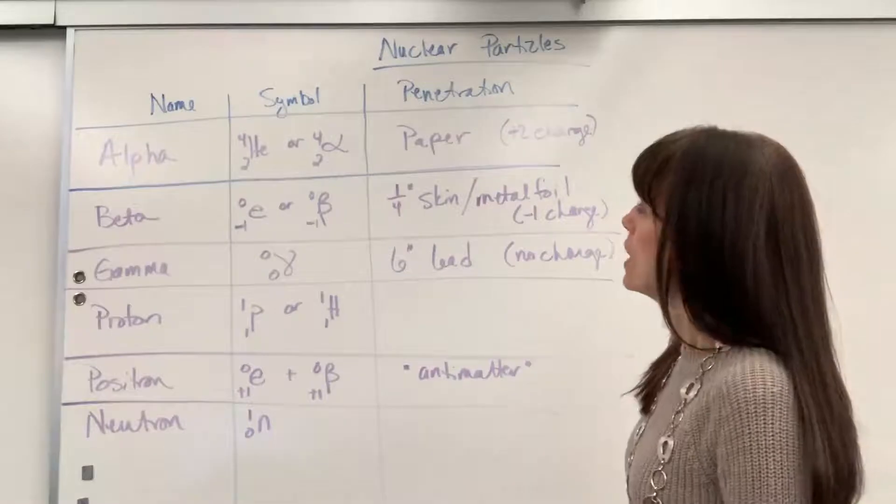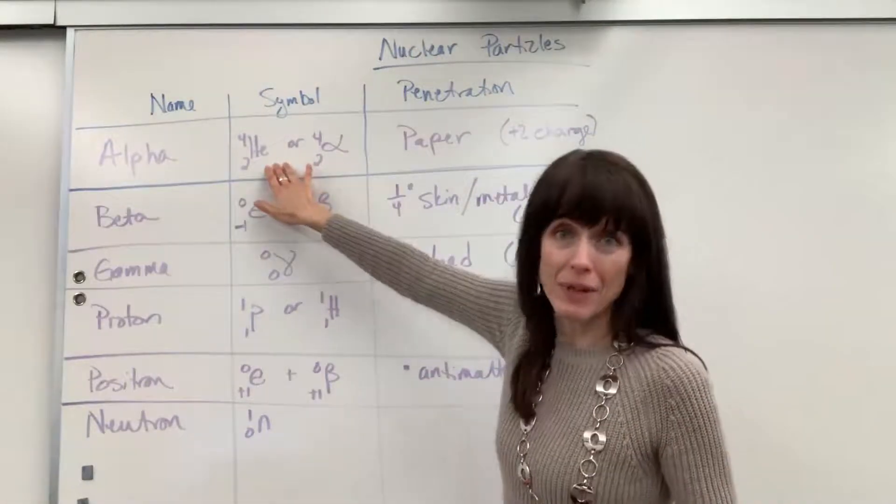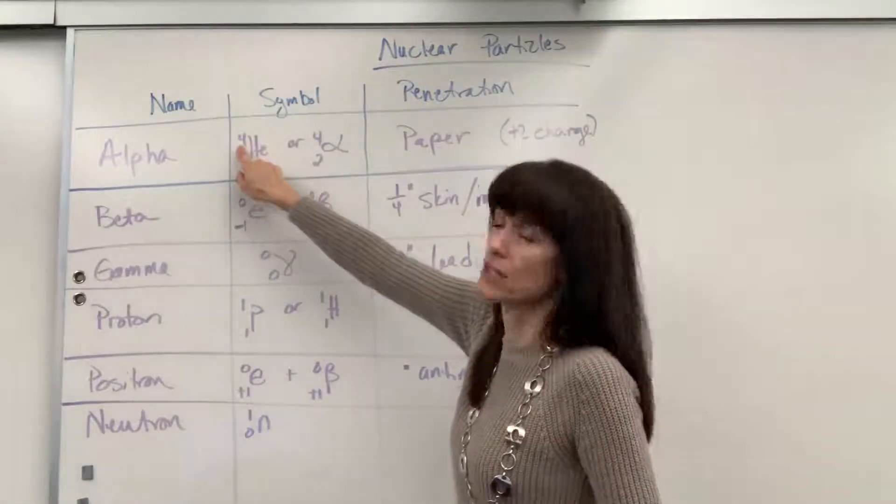Let's start with an alpha particle. You've maybe heard of alpha particles. So alpha particles is really just a helium atom. That's it. Notice your proton's two and it has two neutrons.